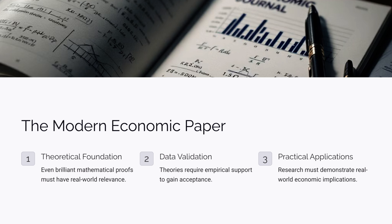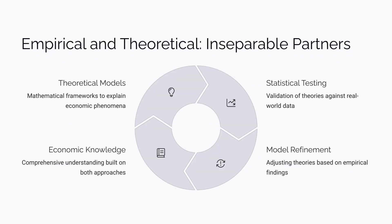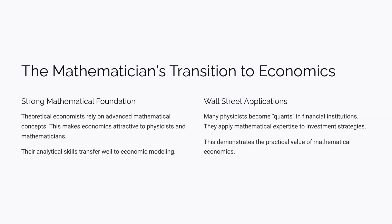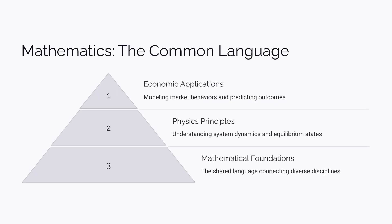Nowadays, even if a paper presents a theoretically brilliant and mathematically flawless proof, it won't be accepted unless it aligns with real-world data. Even theoretical economists must produce basic empirical results to have their work recognised. Empirical economics, in turn, cannot be separated from theoretical economics — after all, empirical economics is the statistical testing of economic theories. If it's separated from economic theory, it's no longer empirical economics; it's just statistics. This is why theoretical economists need a strong mathematical background. In fact, many physicists and mathematicians transition into economics, and physics and economics are deeply connected through mathematics.